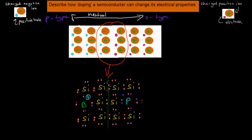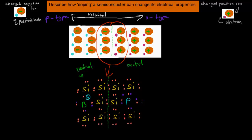The squiggly borderline divides the p-type on one side and the n-type on the other, with extra electrons on the n-type side and extra holes on the p-type side. At the moment both sides are neutral. But once connected, the extra electron on the n-type side is attracted to the extra positive hole on the p-type side. It moves to the other side and fills the hole — we call this recombination. This original electron has recombined with the positive hole.